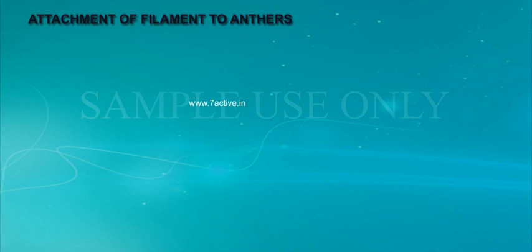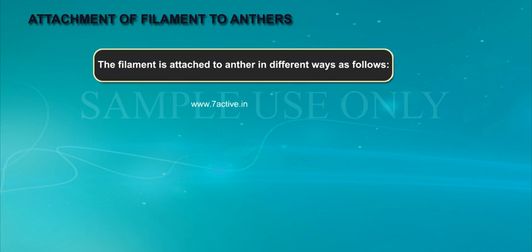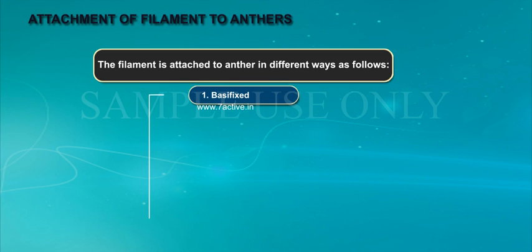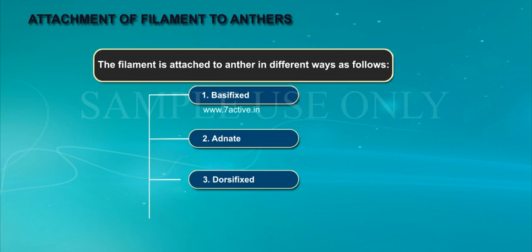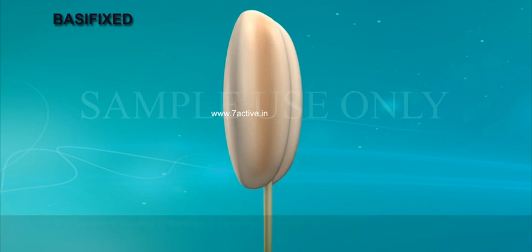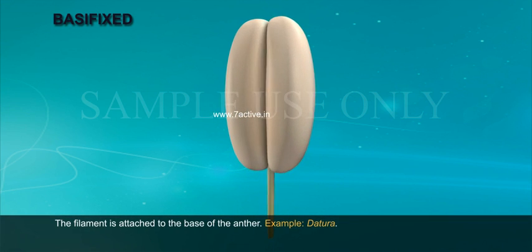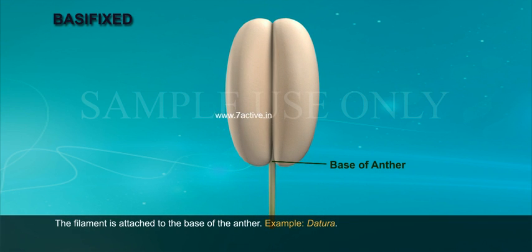Attachment of filament to anthers: The filament is attached to the anther in different ways — 1. Basifixed, 2. Adnate, 3. Dorsifixed, 4. Versatile. Basifixed: The filament is attached to the base of the anther. Example: Datura.